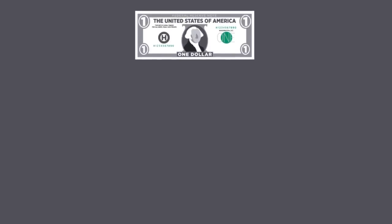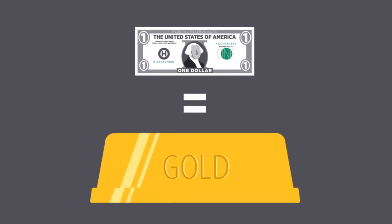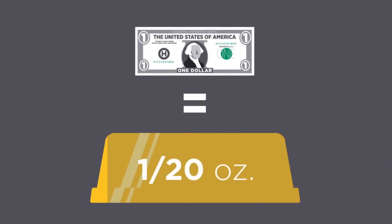Under a gold standard, the government defines a dollar to be a specific weight of gold. And a dollar bill is defined to be a paper object that's made redeemable in that specific dollar weight of gold. So, for example, as was the case in the United States in the early 20th century, the definition of a dollar was taken to mean one-twentieth of an ounce of gold.